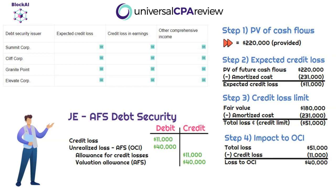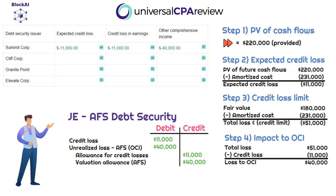The journal entry: debit credit loss $11,000 and credit allowance for credit losses $11,000. For the unrealized loss, debit OCI $40,000 and credit valuation allowance on the AFS investment $40,000. In our simulation table: expected credit loss is negative $11,000, credit loss in earnings is negative $11,000, and the impact to other comprehensive income is negative $40,000 — an unrealized loss. That's Summit Corp done.